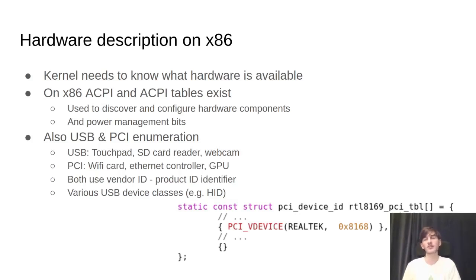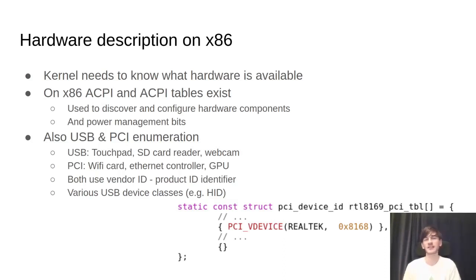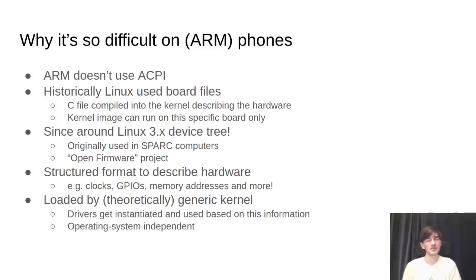On laptops compared to mobile phones, a lot of hardware is on USB or PCI bus, which are enumerable buses - the host can ask 'who's there?' and all devices respond. On my laptop the touchpad, SD card reader, and webcam are on the USB bus; Wi-Fi, GPU, and Ethernet are on PCI. Both buses use a vendor ID and product ID combination to identify a particular device, as you can see in the match table screenshot, and many standard USB device classes exist - that's why you can plug any keyboard or mouse into any computer.